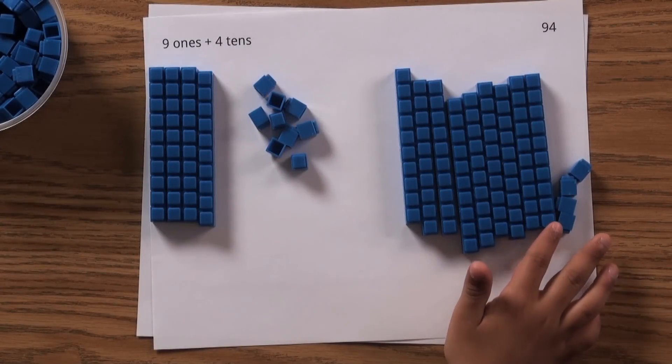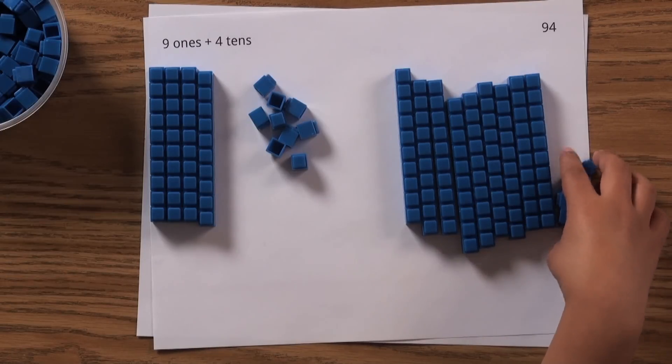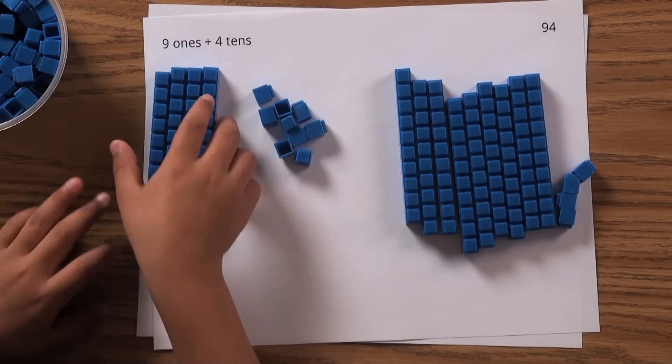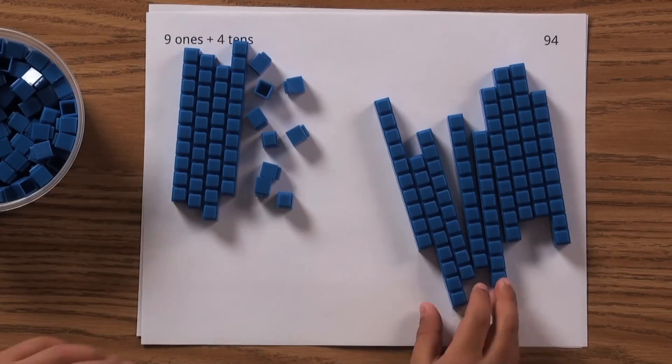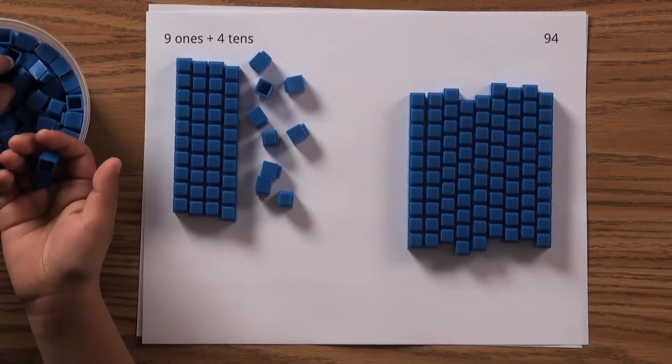'Which one is more?' '94 is more than nine ones plus four tens, because 94 is a really big number. And by putting it backwards, it's just 49, and 49 is way smaller than 94.'